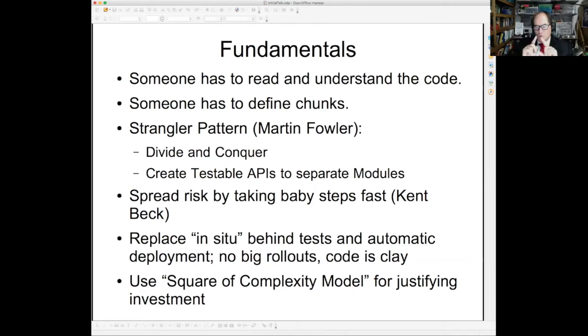If you, you cannot have an executive do that. A software engineer has to say, look, I'm going to draw a box around this part of the code. And we're going to use that as a first thing to rewrite. That allows you to use the so-called strangler pattern, which has been talked about and named by Martin Fowler, to divide and conquer the problem by creating testable APIs to separate the modules. The testable APIs are very important to decrease risk.